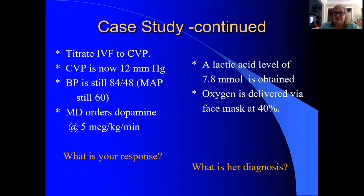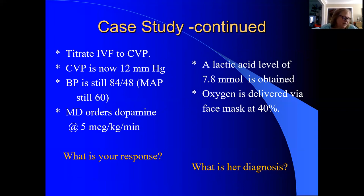Let's start our titration. We're going to titrate IV fluid to our central venous pressure. You'll typically get some volumes to start, and this gives us a measure of how effective our fluid resuscitation is. We've continued giving IV fluids and our central venous pressure is now up to 12 — we were looking at eight to twelve. The problem is that even though CVP has come up, her blood pressure is still low. The mean arterial pressure is still 60, still below normal, so we continue to be worried.